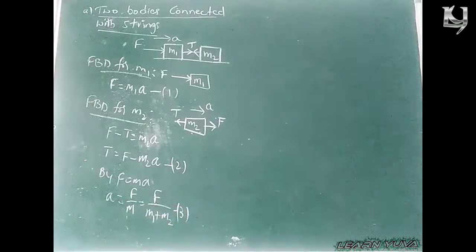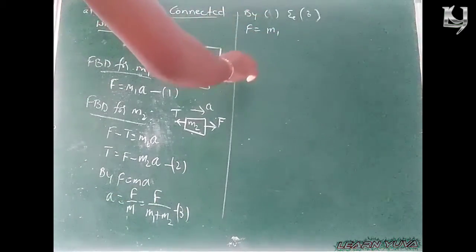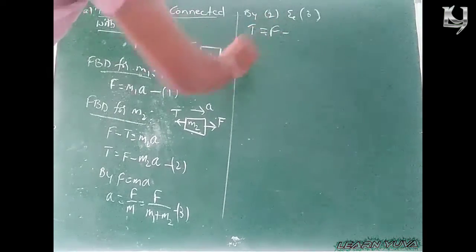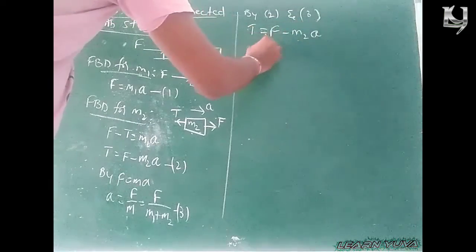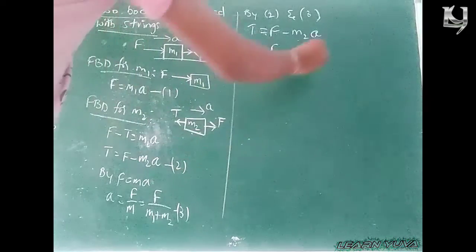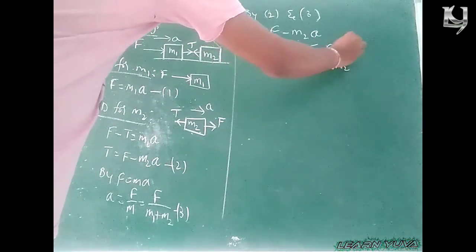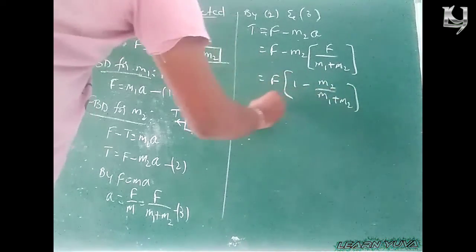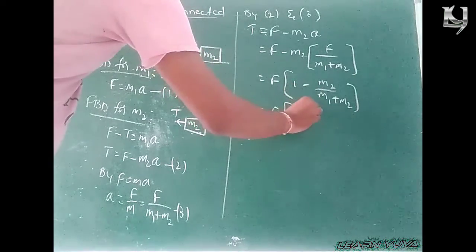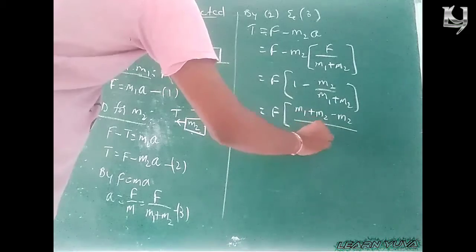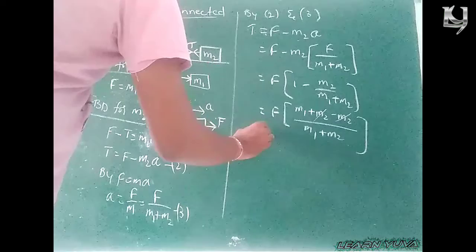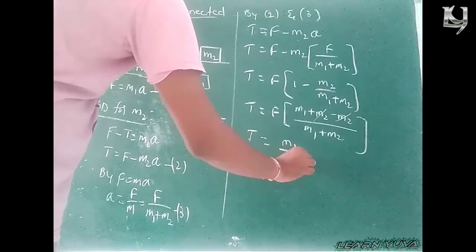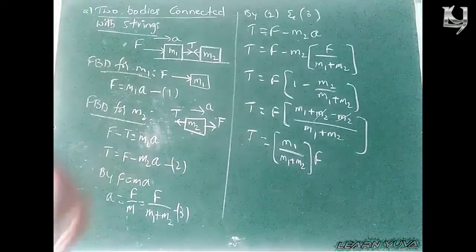With example values M2 equals 2 and M1 equals 3: T is equal to F minus M2·A, that is F minus M2 times F divided by M1 plus M2. Taking F as common: T equals F times (1 minus M2 over M1 plus M2). Taking LCM gives (M1 plus M2 minus M2) over M1 plus M2. The M2 terms cancel, so the tension force T equals M1 times F over M1 plus M2, i.e., T equals M1·F divided by M1 plus M2.